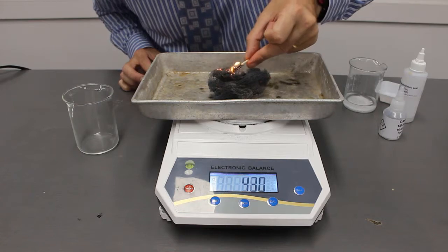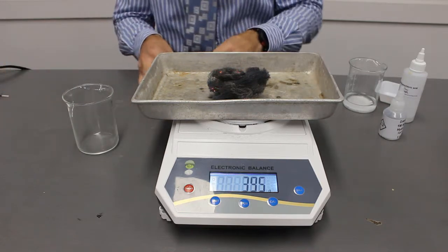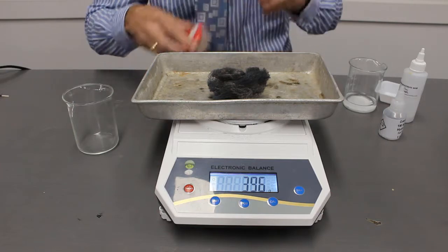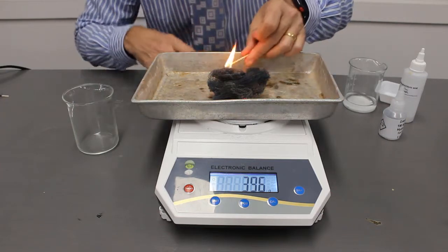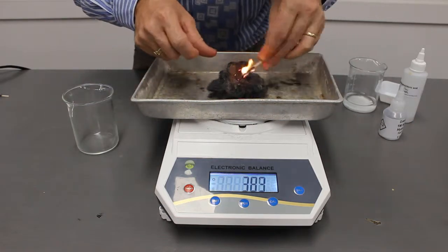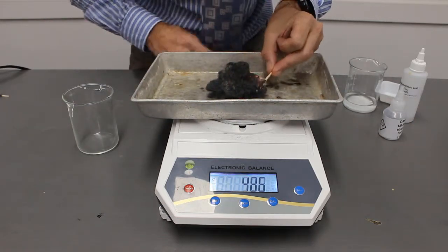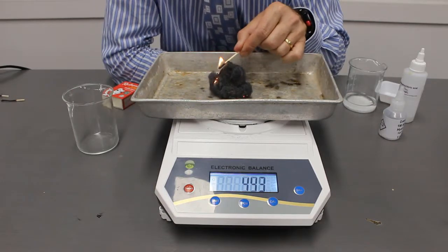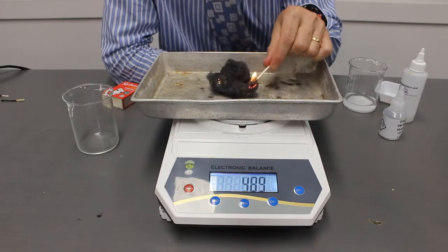I don't know if you can see, but it's actually turning a blue color. So the iron is actually changing color to a blue color. While we're doing this, I want you to make a prediction. What do you think is going to happen to the mass?